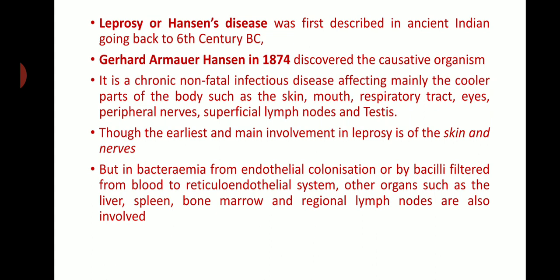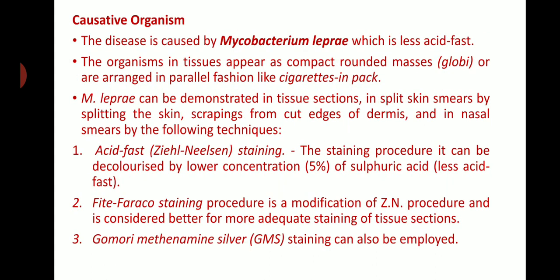It is a chronic, non-fatal infectious disease affecting mainly the cooler parts of the body: skin, mouth, respiratory tract, eyes, peripheral nerves, superficial lymph nodes, and testes. Mostly the skin and nerves are involved. Through bacillary spread via the reticuloendothelial system, other organs such as liver, spleen, bone marrow, and regional lymph nodes are also involved.